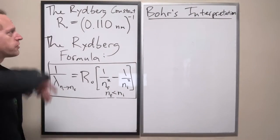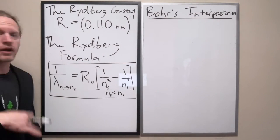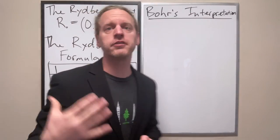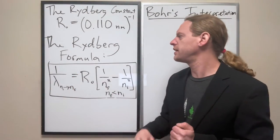So I've intentionally left Rydberg's formula up here because, like I said, this is really the basis for what Bohr made his interpretation.